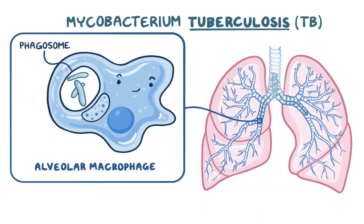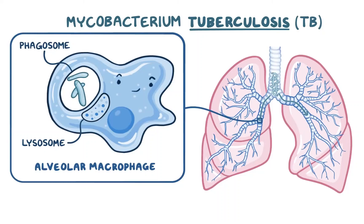With most cases, the macrophage then fuses the phagosome with a lysosome, which has hydrolytic enzymes that can pretty much break down any biochemical molecule. TB is tricky though, and once inside the macrophage, they produce a protein that inhibits this fusion, which allows the mycobacterium to survive. It doesn't just survive though — it proliferates and creates a localized infection.